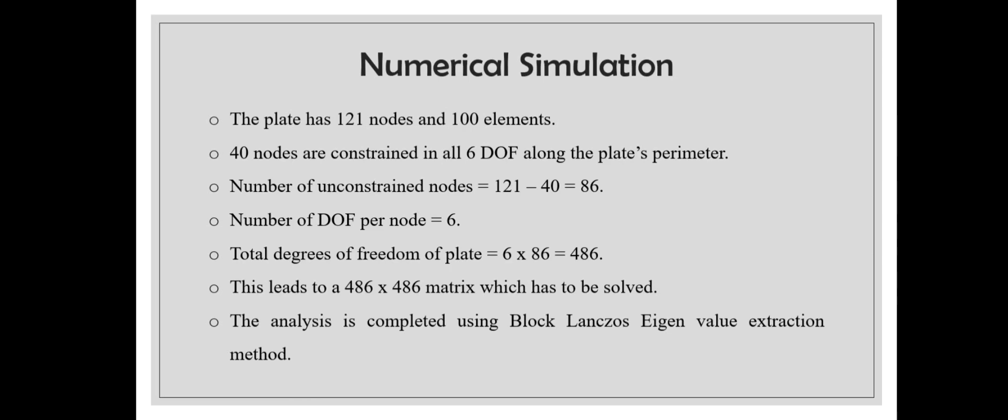The total number of degrees of freedom per node is 6, so the total degrees of freedom of the plate is 6 times 86, which is 486. This leads to a 486 by 486 matrix which has to be solved, which is accomplished using the Block-Lanczos eigenvalue extraction method.